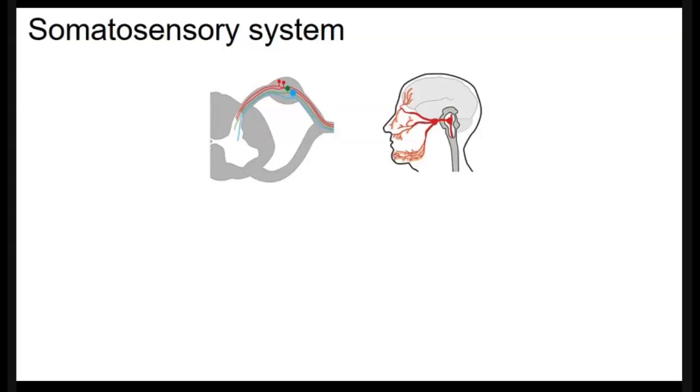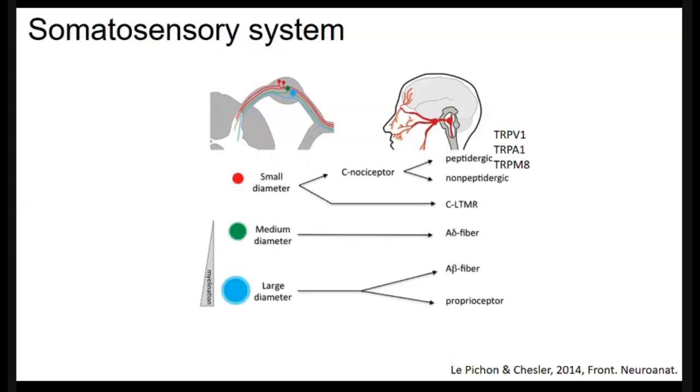So the somatosensory system is a collection of neurons outside the central nervous system that's responsible for detecting the internal and external environment. Sensory neurons reside in ganglia along the spinal cord, DRG, or at the base of the skull, TG, trigeminal ganglia. And each of those neurons send two projections from a common stalk, one to the target tissues in the periphery and one to the spinal cord or the brain stem, depending on whether that's the DRG or TG.